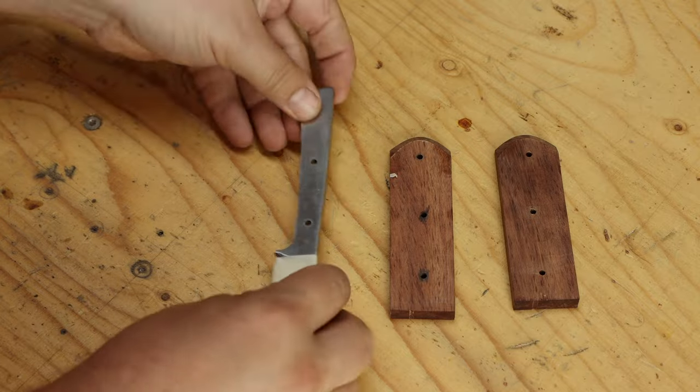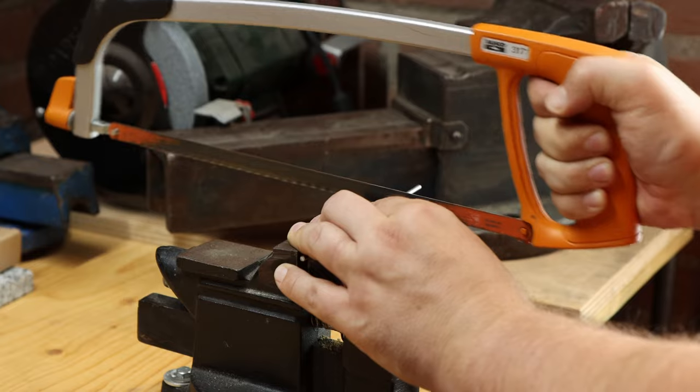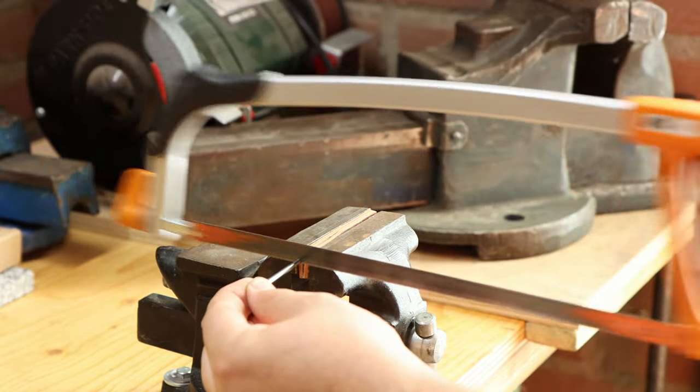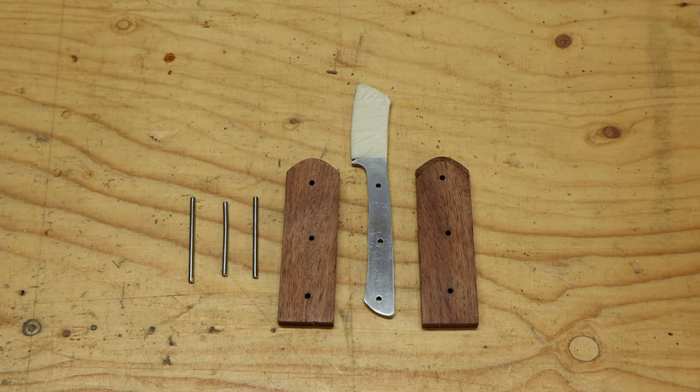The last parts that need to be made are the nickel brass pins. With a hacksaw, I cut the nickel brass rod into three parts and file the ends. With this, all parts are done. We have three pins, two scales, and the blade.